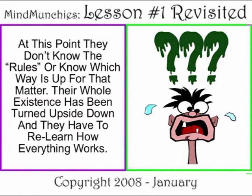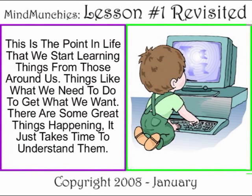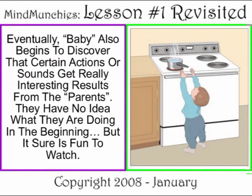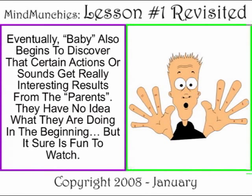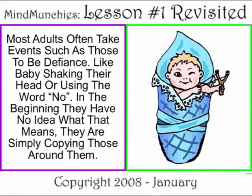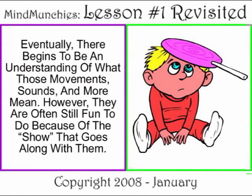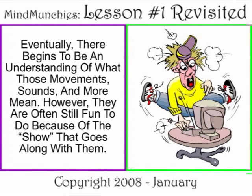At this point, they don't know the rules or know which way is up for that matter. Their whole existence has been turned upside down and they have to relearn how everything works. This is the point in life that we start learning things from those around us — things like what we need to do to get what we want. There are some great things happening; it just takes time to understand them. Eventually, baby also begins to discover that certain actions or sounds get really interesting results from the parents. They have no idea what they're doing in the beginning, but it sure is awful fun to watch. Most adults often take events such as those to be defiant, like baby shaking their head or using the word 'no.' In the beginning, they have no idea what that means — they're simply copying those around them. Eventually there begins to be an understanding of what those movements, sounds, and more mean, though they're often still fun to do because of the show that goes along with them.